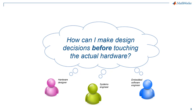If you are a hardware designer, an embedded software engineer, or a systems engineer, one thing you may have asked yourself is: how can I make design decisions before touching the actual hardware? This is a challenging problem. Ideally, you don't want to wait until you've completed a design to find out that you wish you would have made a different design decision early on in the process. This is the question we're going to be keeping in mind throughout this video series, and we're going to look at how you can address it using some of the tools in MATLAB and Simulink.